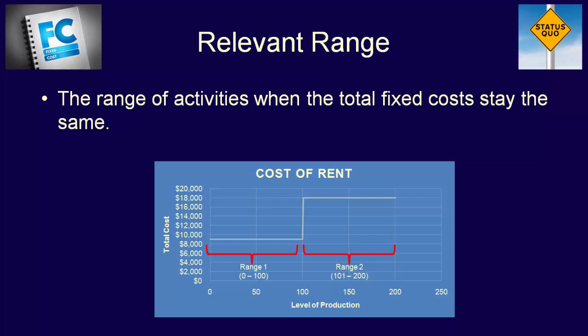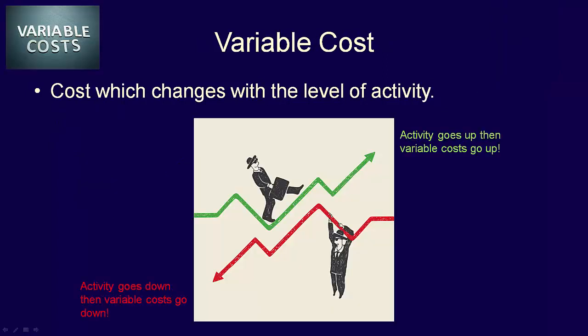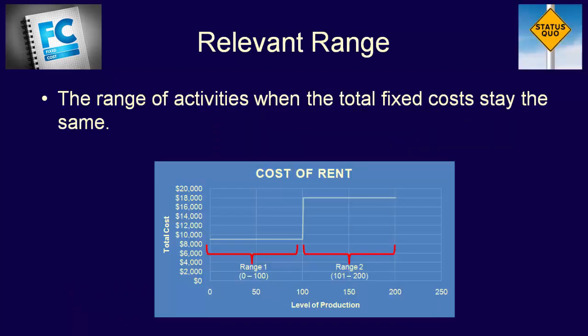Let's recap everything we've learned. Cost behavior is a term used to describe how a cost changes when the level of activity changes, and the level of activity can mean many different things. A variable cost is a cost that changes when the level of activity changes — if it goes up, total variable costs go up; if it goes down, total variable costs go down. A fixed cost is a cost that does not change with the level of activity — total fixed costs stay the same if the level of activity goes up or down, at least in the relevant range. And the relevant range means the range of activity when the total fixed costs do not change. That's cost behavior.